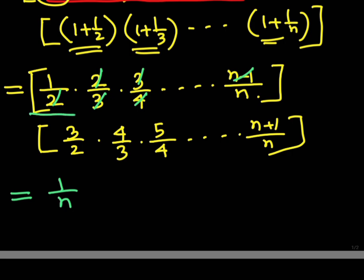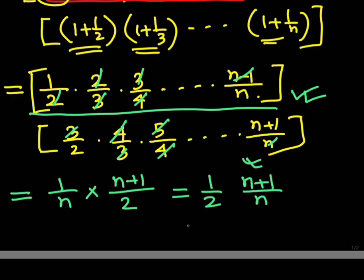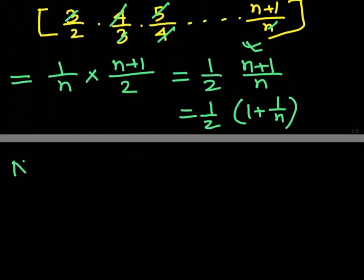In the first product, two, two, three, three, and all intermediate terms cancel, leaving one by n. In the second product, three, three, four, four, five, up to n all cancel, leaving n plus one by two. Combining: one by n multiplied by n plus one by two equals one half into one plus one by n.